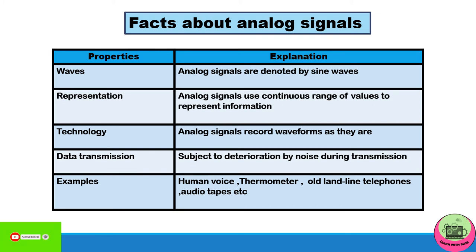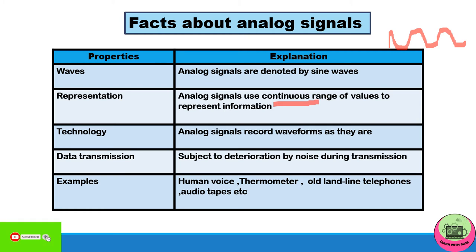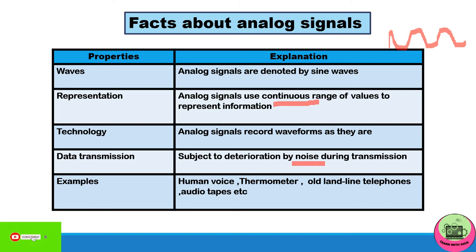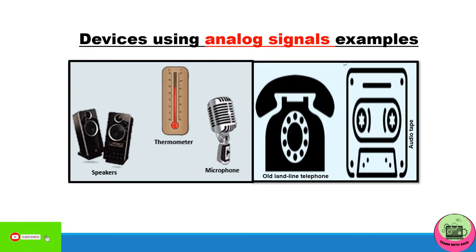Analog signals are represented by sine waves, as seen in the graphs. They use a continuous range of values to represent information. Analog signals record waveforms as they are — there is no sampling; it just records the waveforms as it receives them. They are subject to deterioration by noise during transmission, meaning there can be unwanted disturbance while data is being sent. Examples include human voice, thermometer, old landline telephones, and audio tapes.